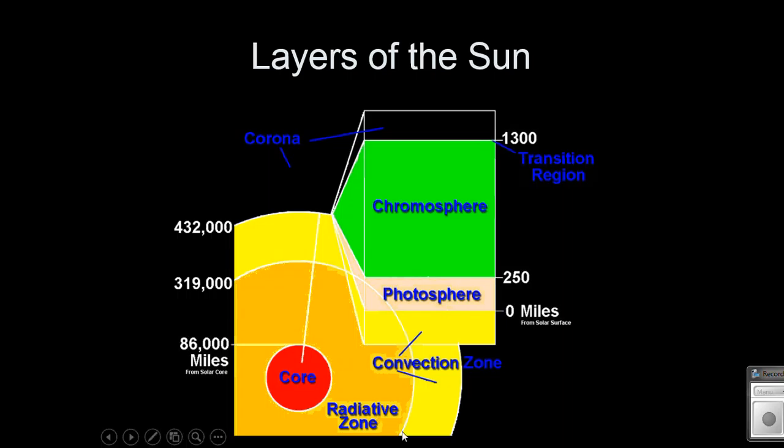So in our inner areas, we have our radiative zone. And then we get outside of that, where we get our atmosphere, where we have our chromosphere, our photosphere, and our corona.